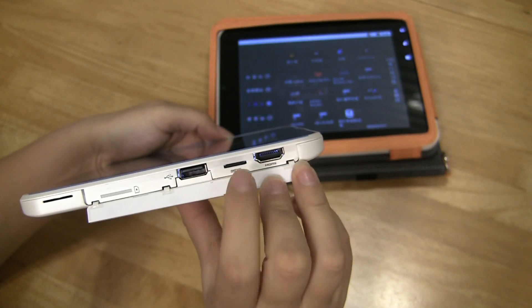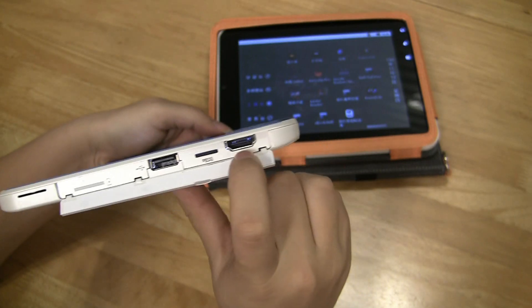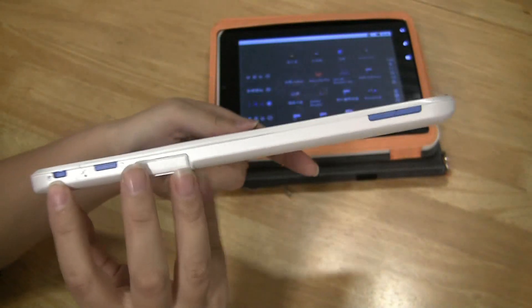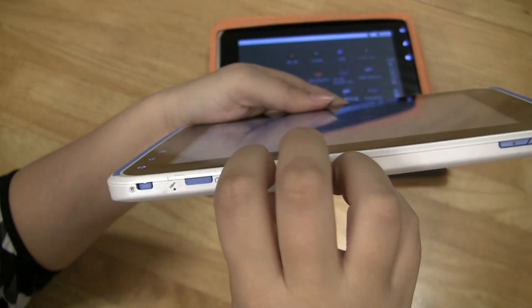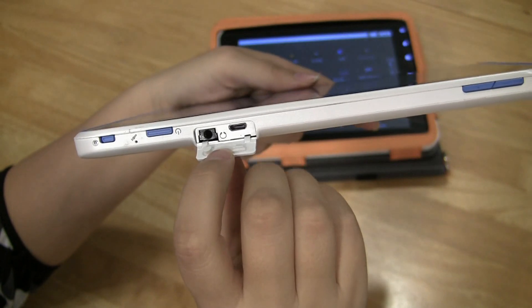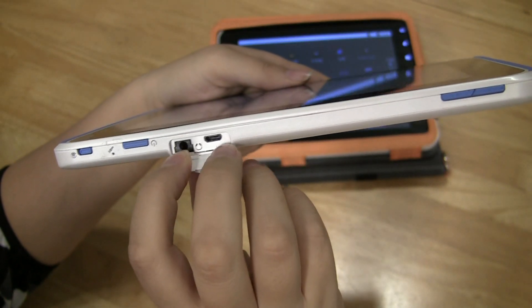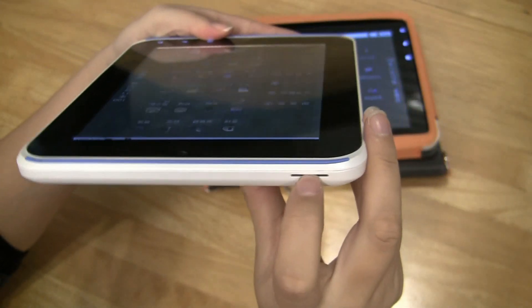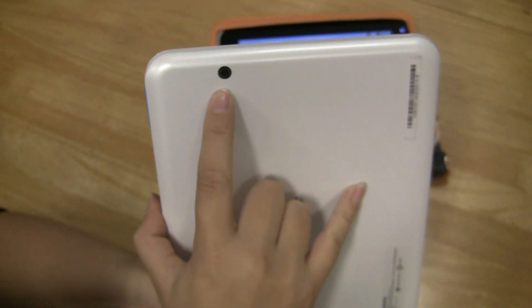There is HDMI out because Tegra 2 is capable of that. If we keep going along the top, we have a lock for the screen, power button, another little port flap there, and that's for their micro USB and the headphone jack. And if I keep going, there's the volume rocker.